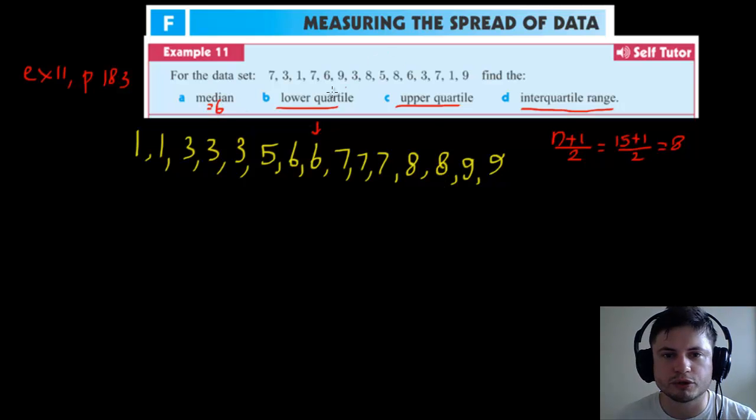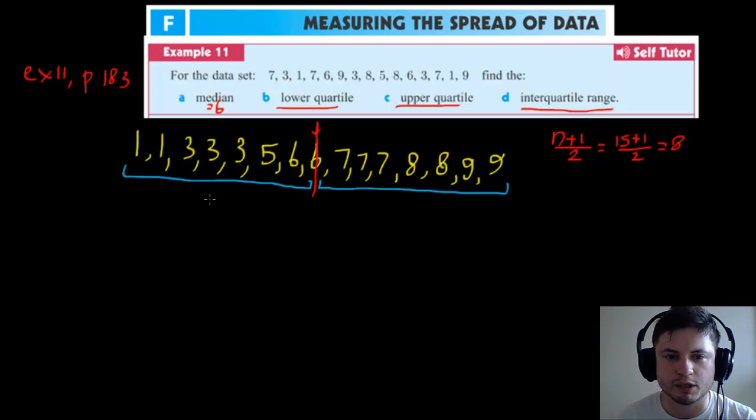a line where the median is, and now we're going to use these two different sets as separate statistics or separate data sets. Essentially, we are now looking for two other medians: one median right here and one median right here. This left median is going to be called lower quartile because it's on the lower side.